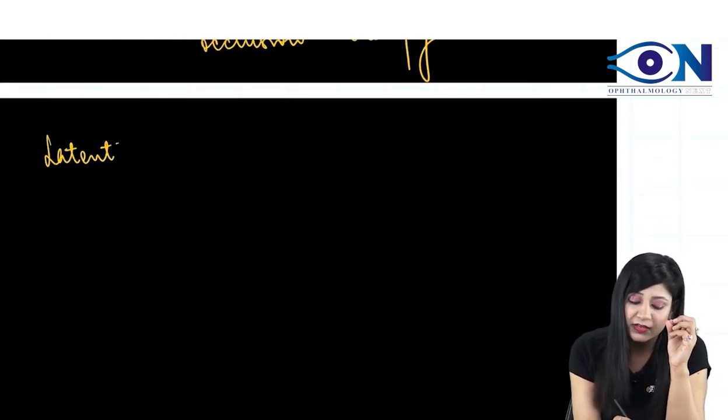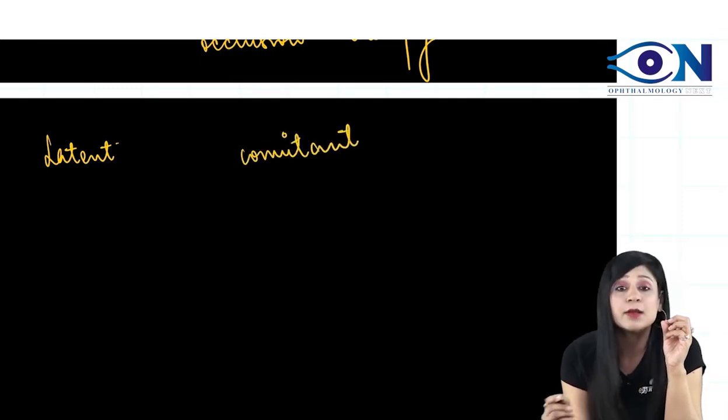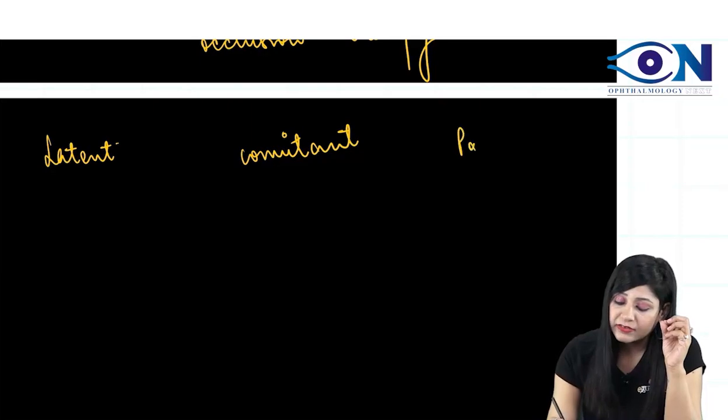We have three kinds of squint. One is the latent squint. One is the comitant, that is non-paralytic squint. And third is the paralytic variety of squint.